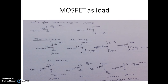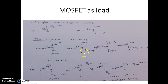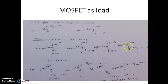For PMOS: if you look from the source with lambda non-zero, it is 1/gm ∥ R0; if you look from the drain, it is R0. Summary: looking from the drain — if lambda = 0 it is infinity (both NMOS and PMOS); if lambda ≠ 0 it is R0 (both NMOS and PMOS). Looking from the source — if lambda = 0 it is 1/gm; if lambda ≠ 0 it is 1/gm ∥ R0. This holds for both NMOS and PMOS.